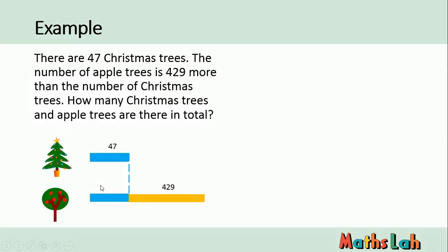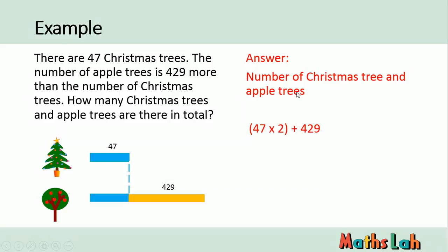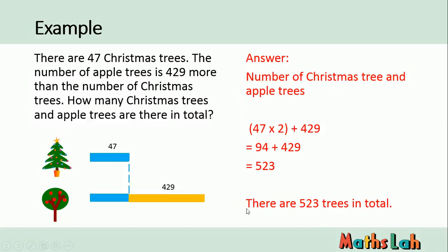It's very simple. For the apple trees, we just add the blue part and the orange part. Alternatively, you can see we have two blue parts, so it's 47 multiplied by 2 plus the additional 429. That is two blue bars plus one orange bar, which gives us 94 plus 429, equaling 523. This is similar to the previous question except there is multiplication. Just note there are two blue bars and one additional orange bar. There are 523 trees in total.